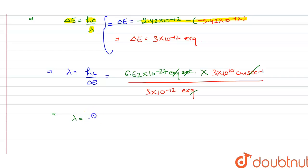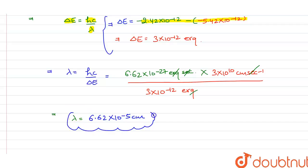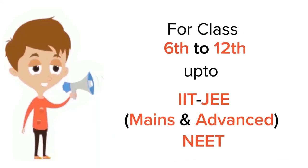Solving, we get λ = 6.62×10⁻⁵ cm. This is the value of the wavelength in centimeters. I hope you got this concept — thank you.